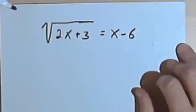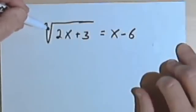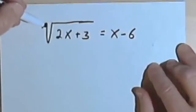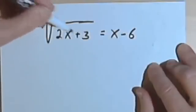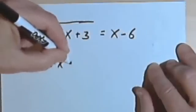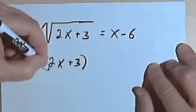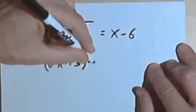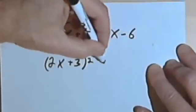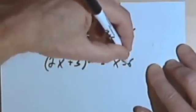Now I can think of this two ways. I can either remember that if I take a square root and I square it, I get rid of the radical sign. Or I could convert this to something like 2x plus 3 raised to the one-half power, and that's going to equal x minus 6.